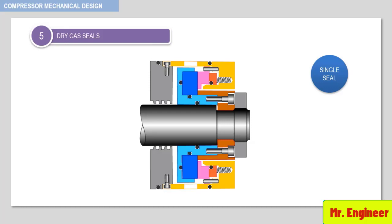Single seals are particularly advantageous as they occupy less space at the compressor ends and are best suited to keep the lateral critical speeds away. Carbon dioxide compressors used in fertilizers are a classical example where single seals are employed.